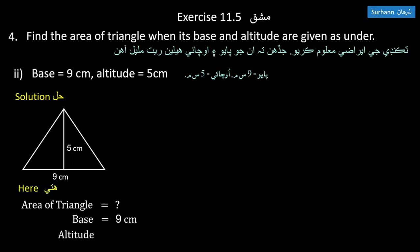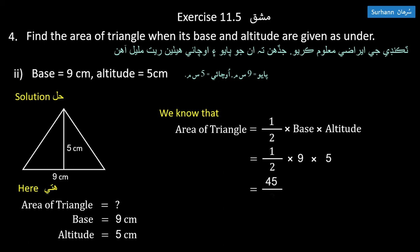Part two: base is 9 centimeters, altitude is 5 centimeters. Using the formula, area of triangle equals one-half times 9 times 5, which equals 22.5 square centimeters.